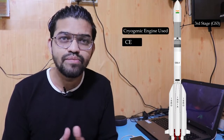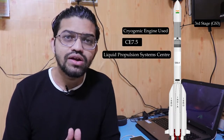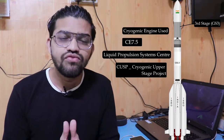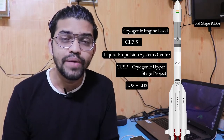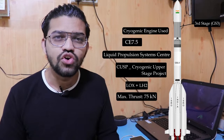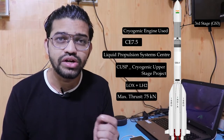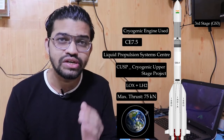The third stage is called GS3. It uses the cryogenic engine CE-7.5, India's first cryogenic engine developed by the Liquid Propulsion Systems Centre. This engine is part of the CUSP — Cryogenic Upper Stage Project. The fuel used is LOX (liquid oxygen) plus LH2 (liquid hydrogen), producing a maximum thrust of 75 kilonewtons.